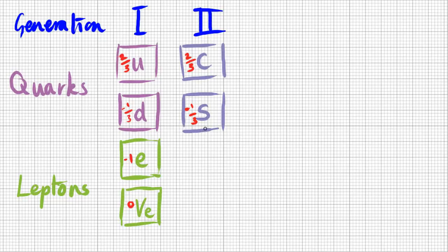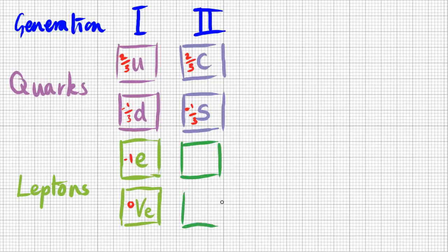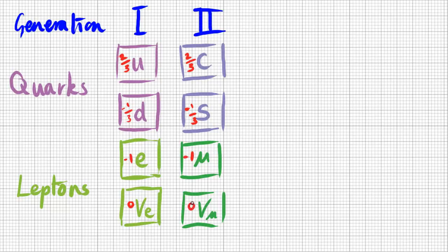Charm and strange work very similarly to up and down, but they have much more mass, so their charges are the same but their mass is much greater. Therefore we do not see them in most of the matter we observe around us at the relatively low energies at which we live. Physicists figured there must be a symmetrical group of leptons, and yes — the more massive electron-like particle given the symbol μ is the muon, and its neutral partner is the muon neutrino. The charges are the same as the first generation of leptons.